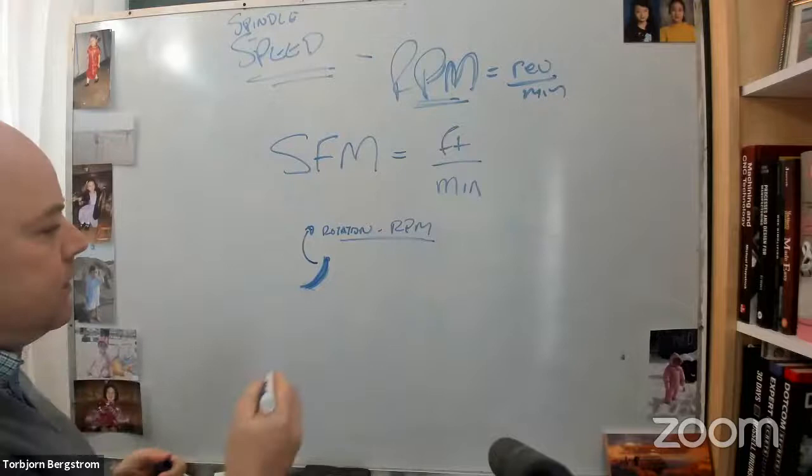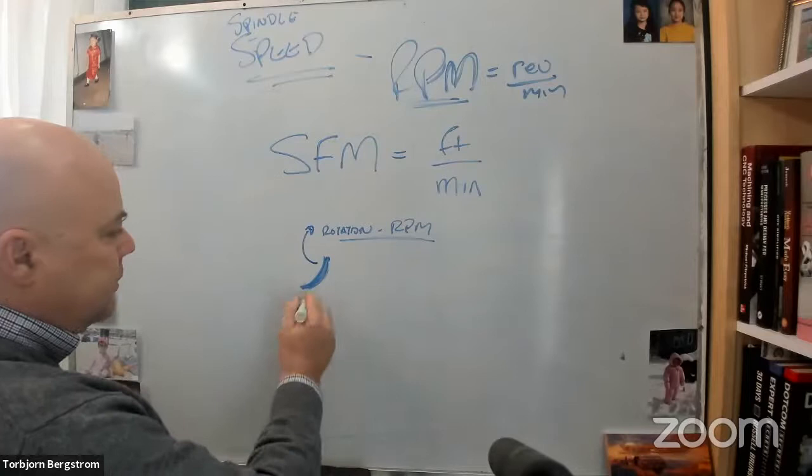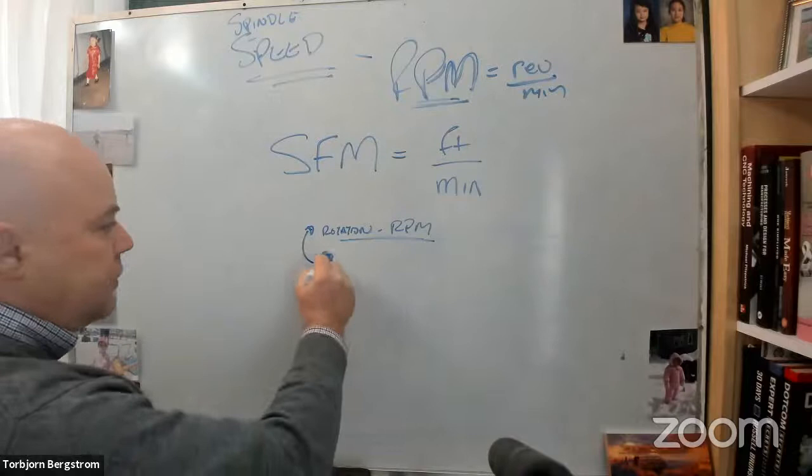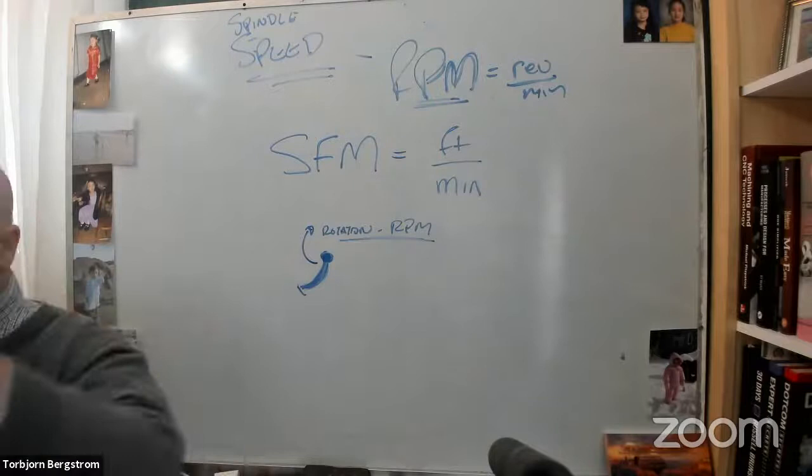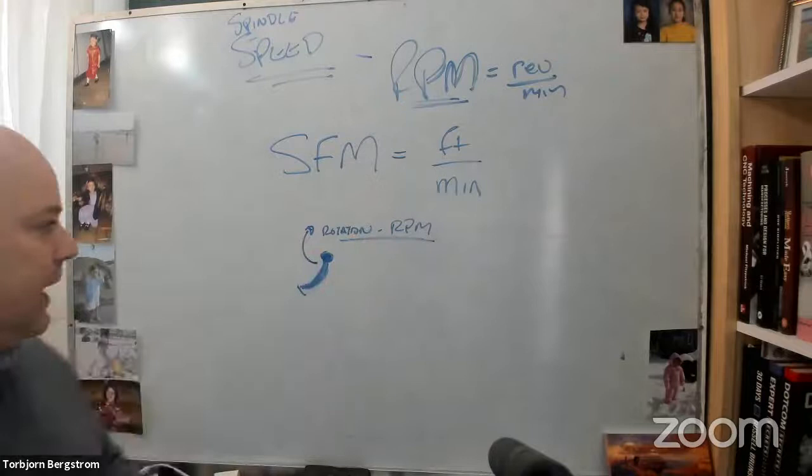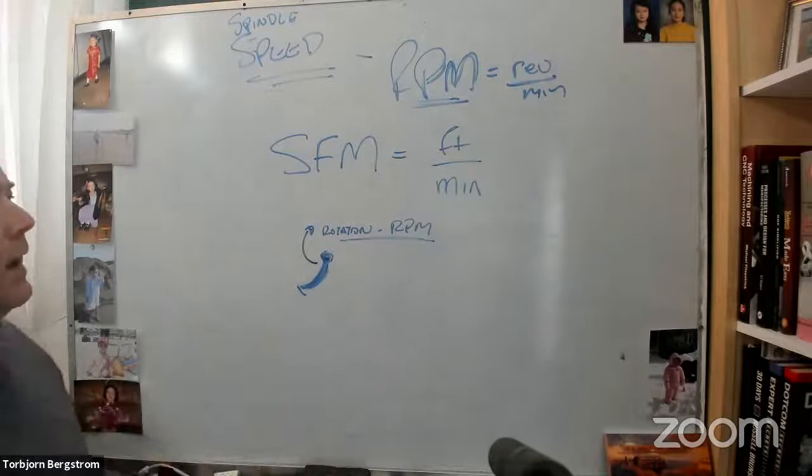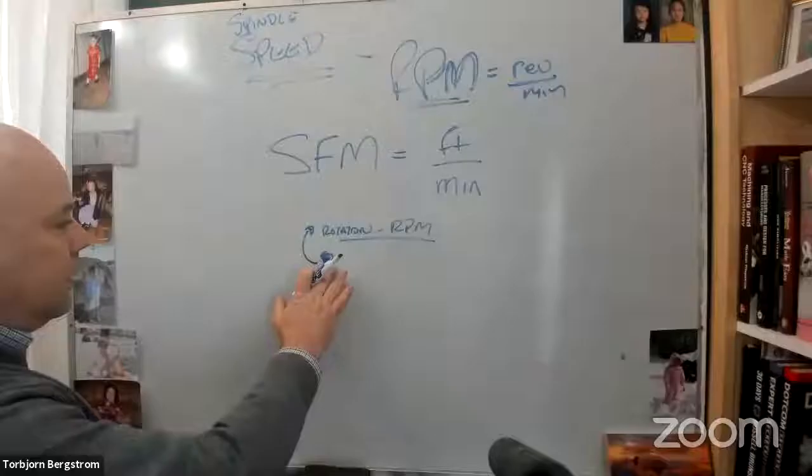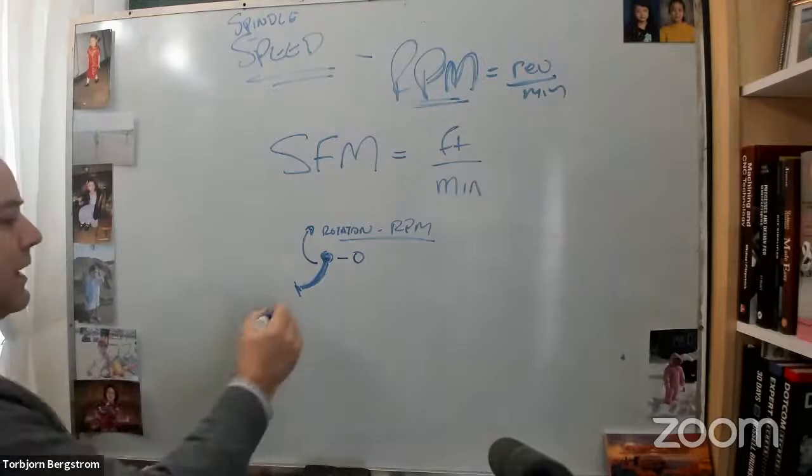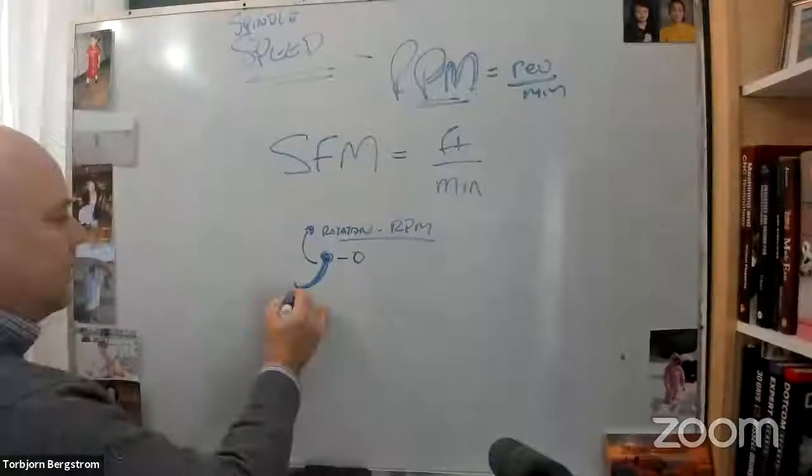So if this is my cutting edge, the speed changes from here to here, right? If I'm at the center of the tool, what is the velocity, the scalar of the vector velocity at the center of the cutting tool as the tool spins? Ignore for the fact that it might be feeding. Just consider the fact that it's spinning. At the center of the tool, what's the velocity? Zero, right? What's the velocity at the outside edge of the tool? More than zero.